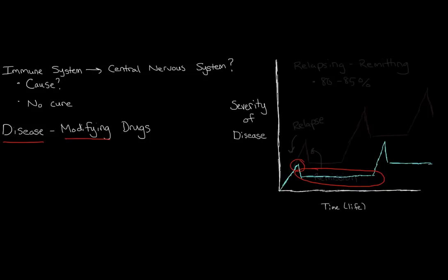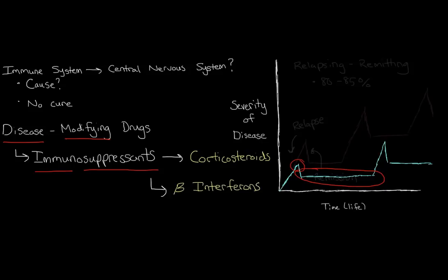So what are some disease-modifying drugs? Well, most of them are immunosuppressants. These are going to suppress the immune system. One example of an immunosuppressant are the corticosteroids. These are steroid hormones that are released by the adrenal glands above your kidneys, but they can also be given to a person as medication. And then you also have the beta interferons. An interferon is a chemical that's released by the immune system to manage inflammation. A beta interferon will suppress the inflammation.